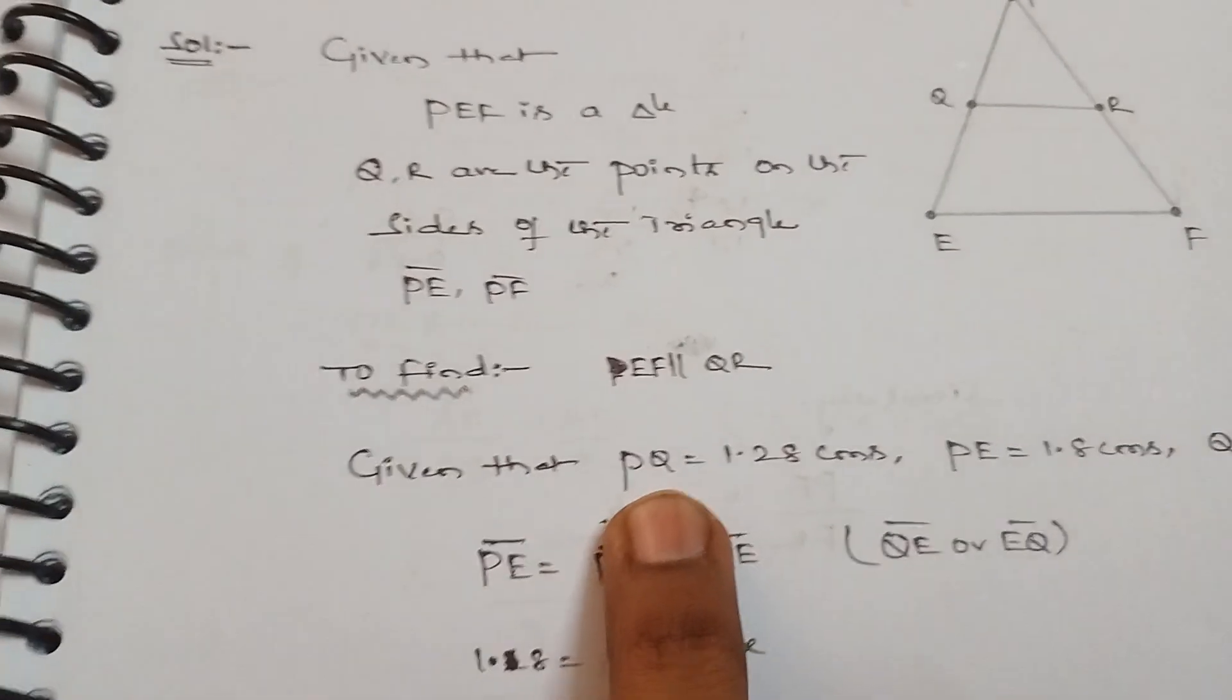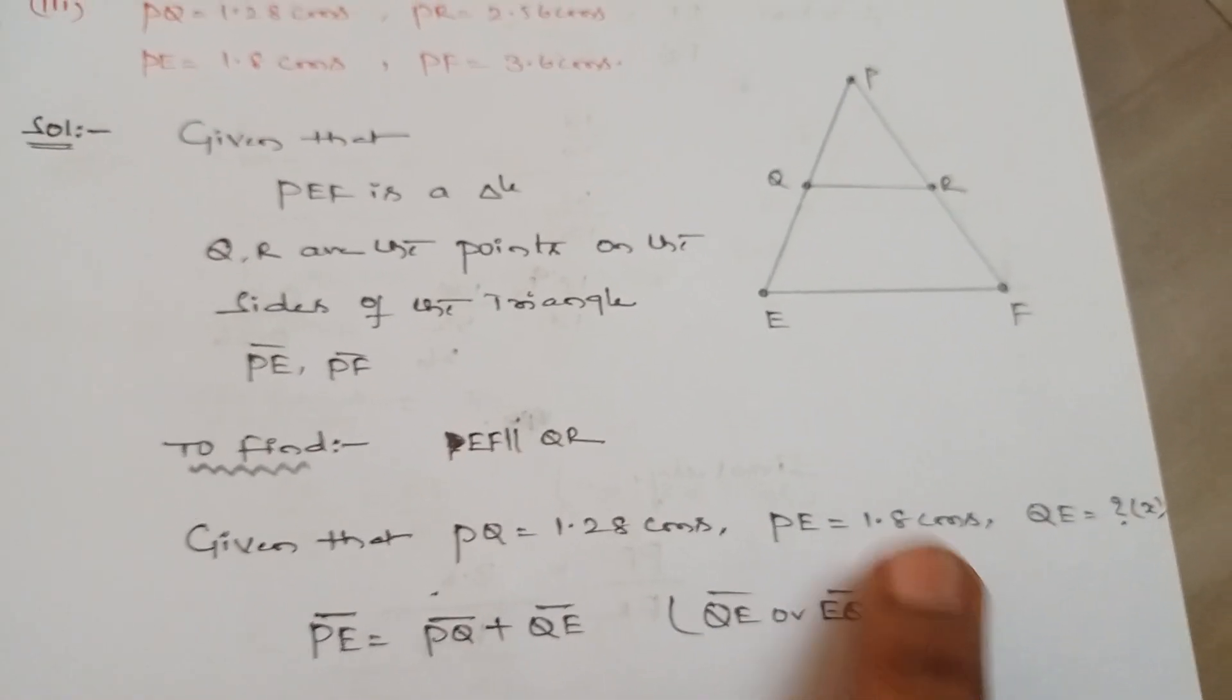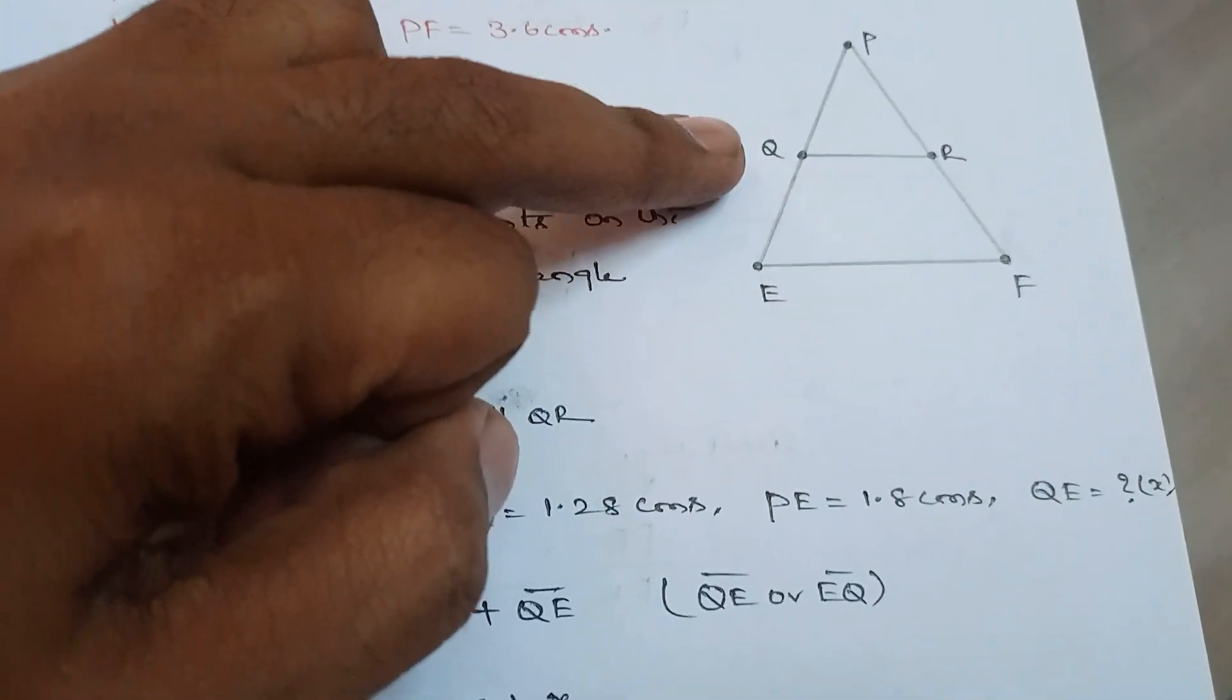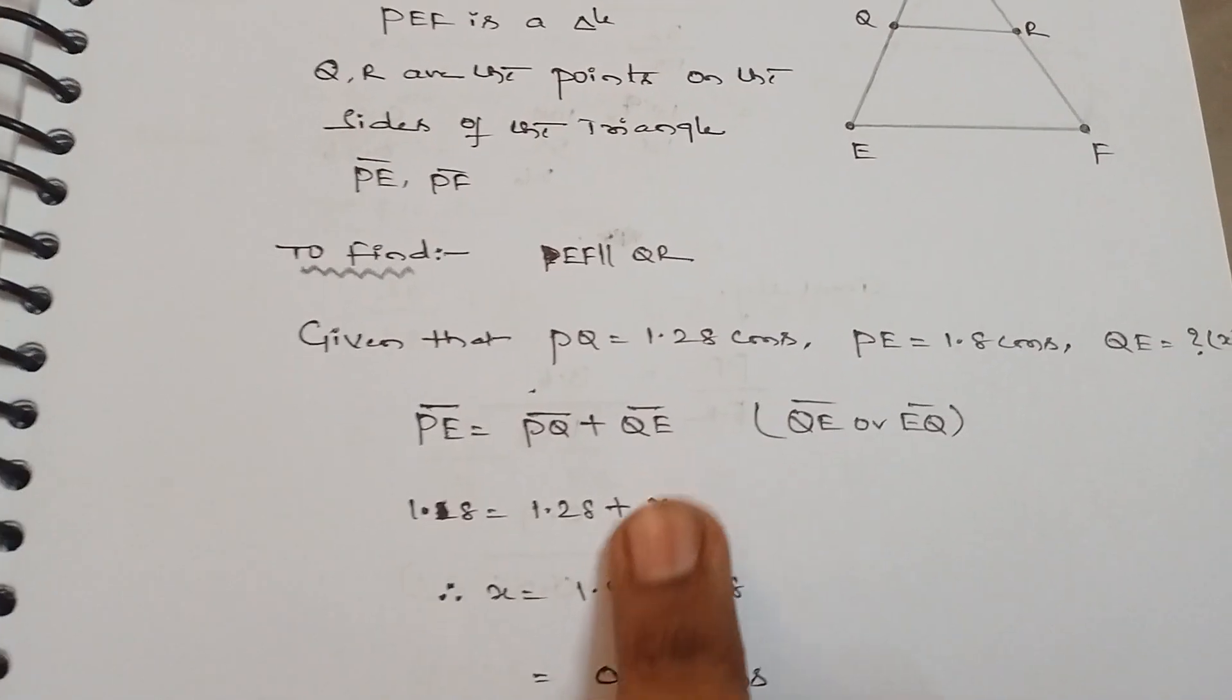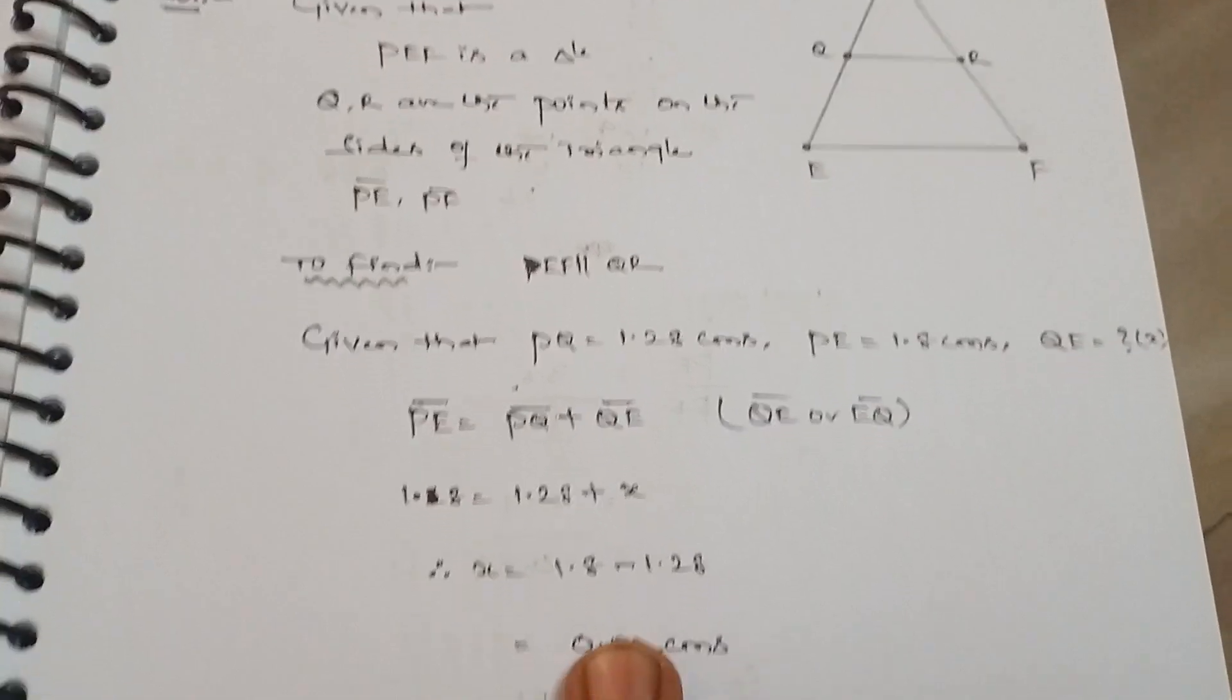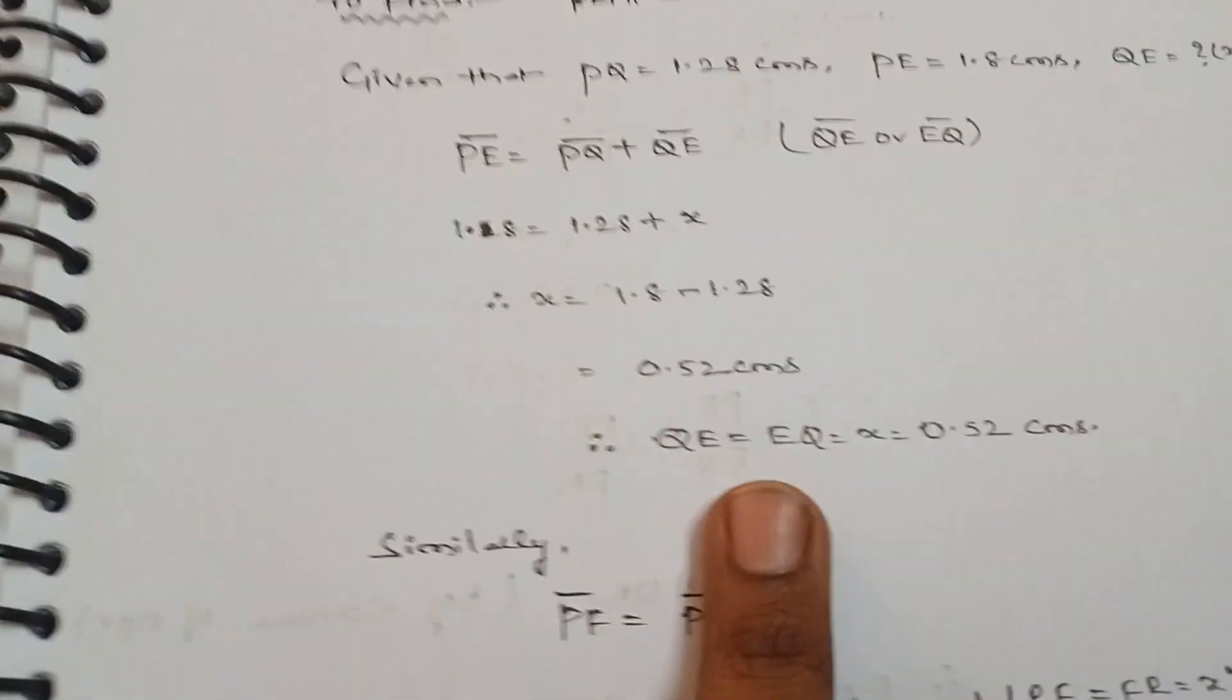What is given here? PQ is given as 1.28, PE is given as 1.8. Okay, how can you find QE? PE minus PQ will get QE value, guys. Okay, that one I mentioned here. We get x value. I took as QE. Okay, we get 1.8 minus 1.28, we get 0.52.